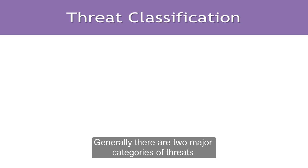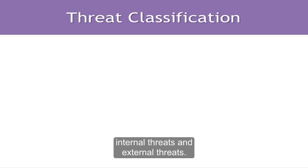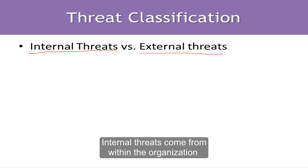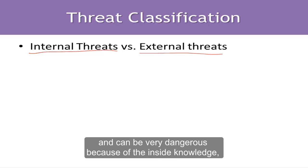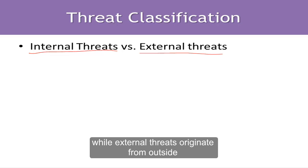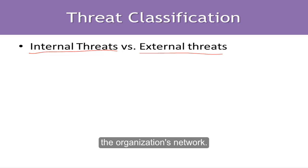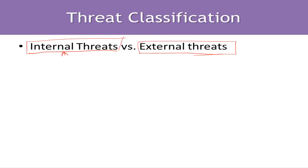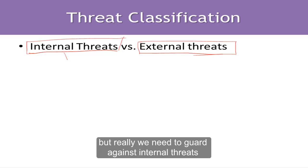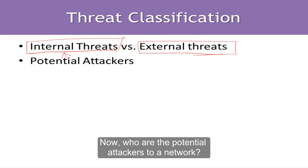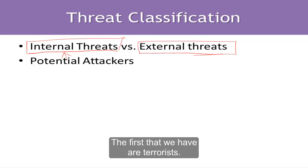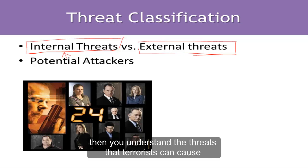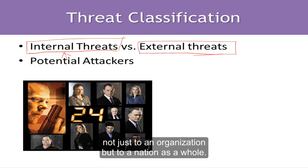Generally, there are two major categories of threats to a network: internal threats and external threats. Internal threats come from within the organization and can be very dangerous because of inside knowledge. External threats originate from outside the organization's network. We tend to focus more on external threats while ignoring internal threats, but we really need to guard against internal threats because they can also be very dangerous. The first potential attacker type is the terrorist, who can pose threats not just to an organization but to a nation as a whole.